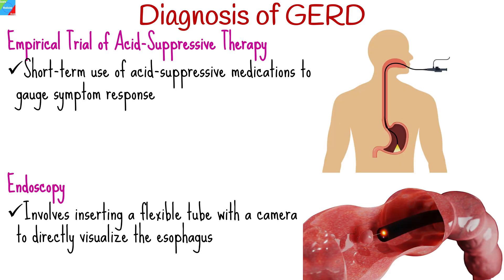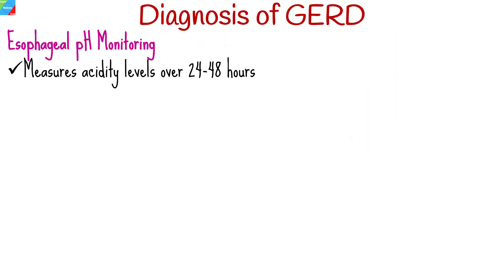Endoscopy involves inserting a flexible tube with a camera to directly visualize the esophagus for inflammation, erosions, or complications. Esophageal pH monitoring measures acidity levels over 24 to 48 hours, aiding in identifying acid exposure frequency.